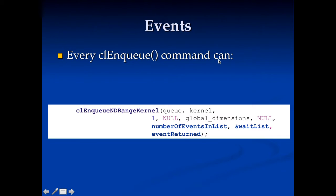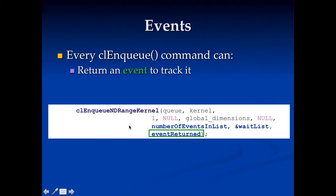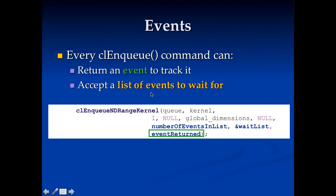Every CL enqueue command has three things at the end: number of events in list, wait list, and event returned. The last parameter gives you an event object that tracks the thing you enqueued. If you enqueue a kernel and ask for an event back, you can use that event to find out if the kernel is done and to have other things wait for the kernel to finish. You also provide a list of events to wait for, so you can tell enqueued items to wait for particular things to finish before they execute.